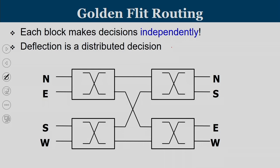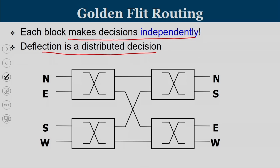Golden flit routing uses four blocks called permuter blocks in what is called a permutation deflection network. Deflection is taken as a distributed decision, so each block makes decisions independently. This parallel port allocation scheme replaces the sequential port allocator. The flits coming from north, east, south, and west input directions are processed, and the outputs go to north, south, east, and west output ports.